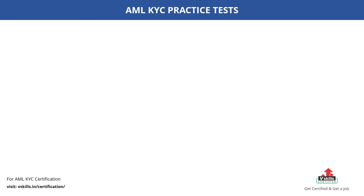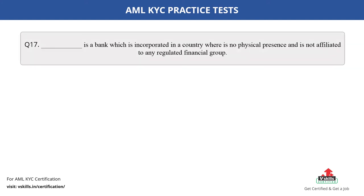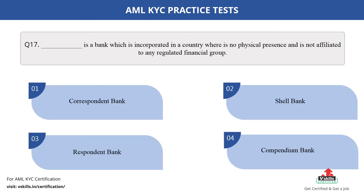Question number 17. Dash is a bank which is incorporated in a country where there is no physical presence and is not affiliated to any regulated financial group. Fill in the blank. The options are: A. Correspondent bank; B. Shell bank; C. Respondent bank; D. Compendium bank. The correct answer is option B.